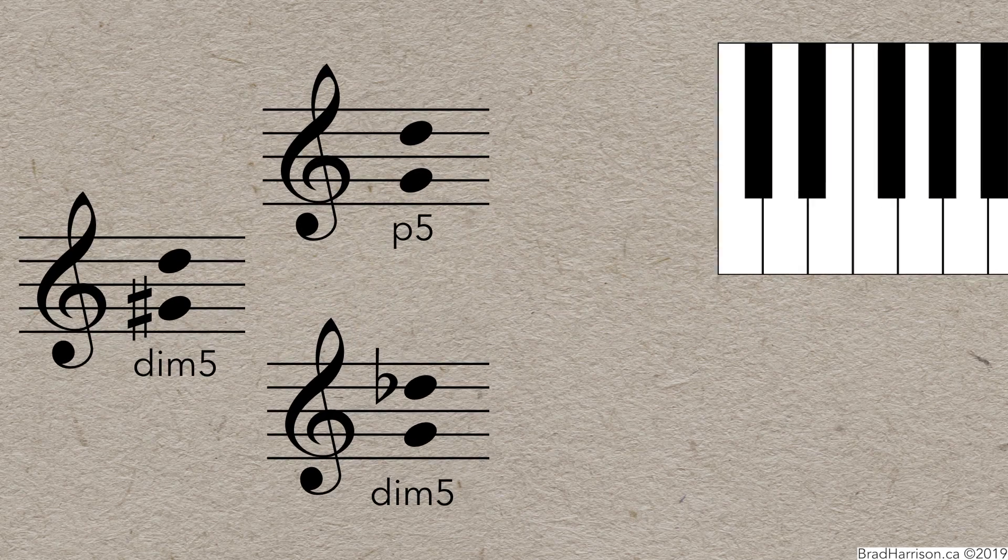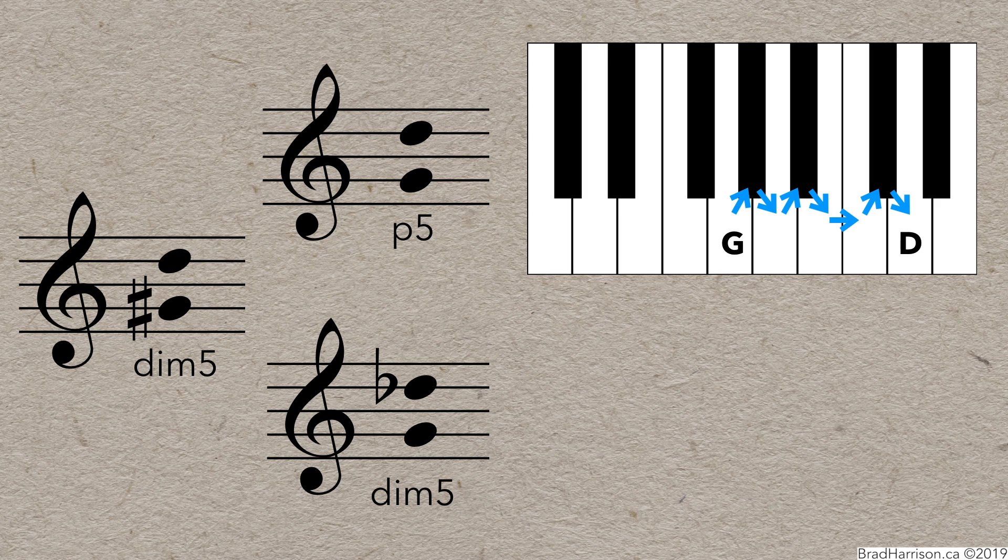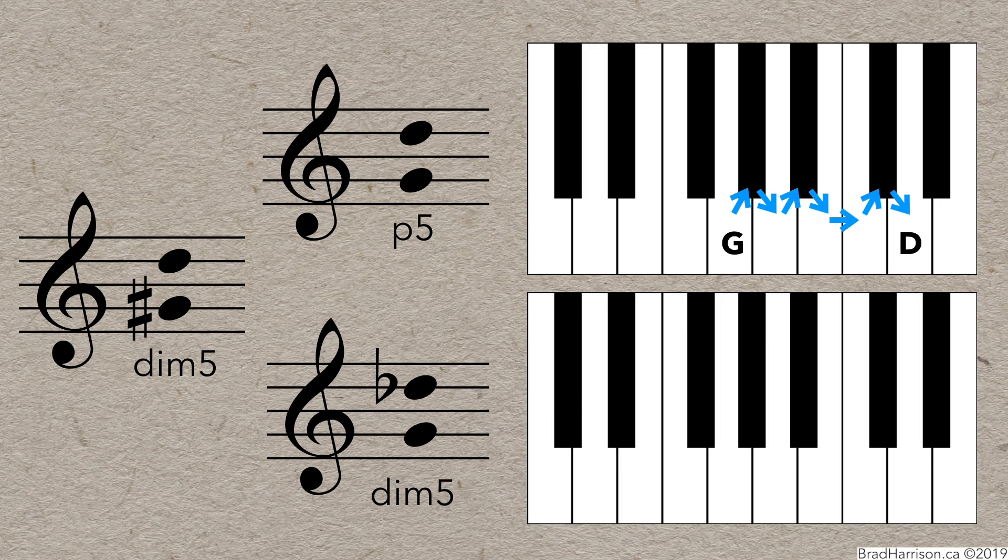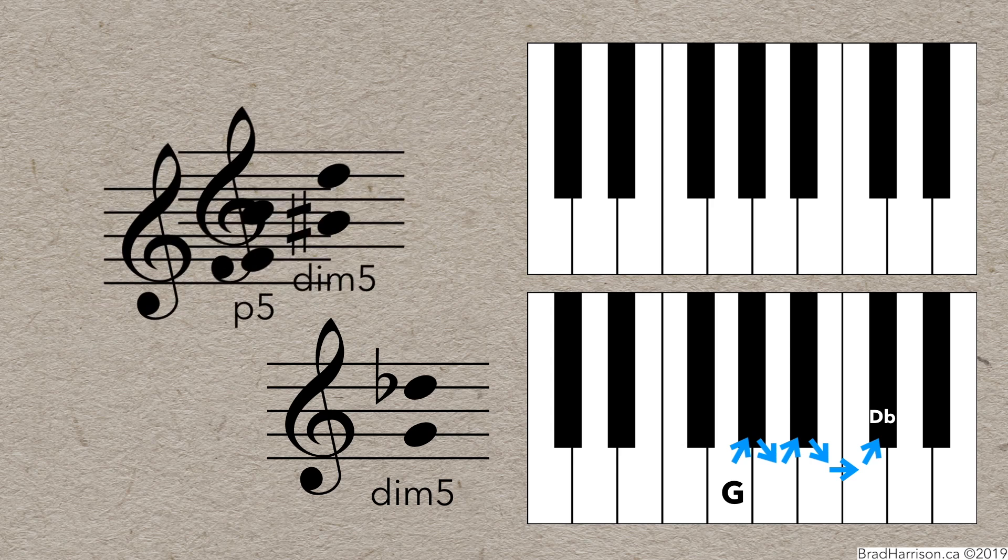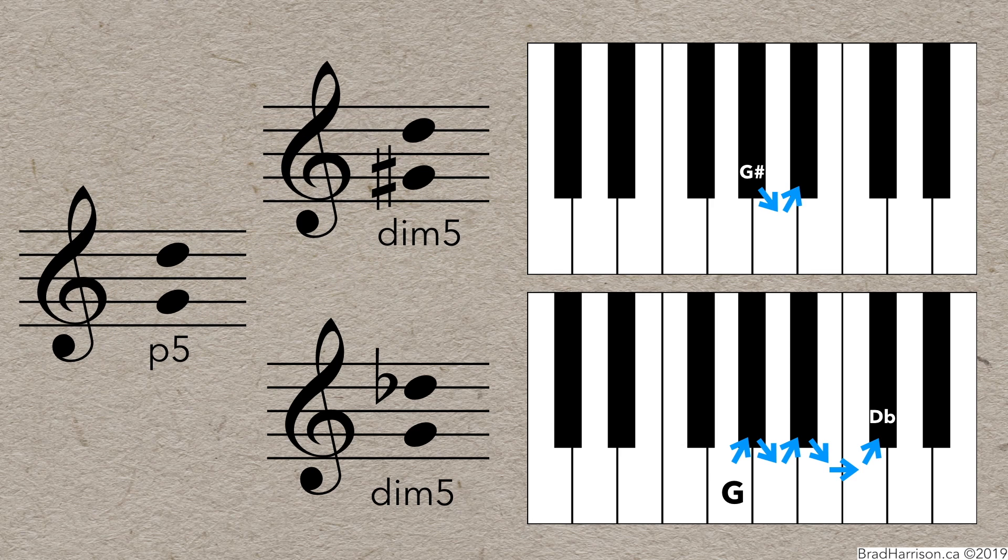This is easily visualized on the piano. G to D is a perfect 5th, and it's 7 semitones away. G to D-flat is a diminished 5th, and it's 6 semitones away, one less than the perfect 5th. Finally, G-sharp to D is also just 6 semitones away, so it's also a diminished 5th.